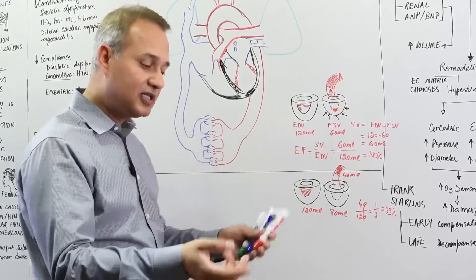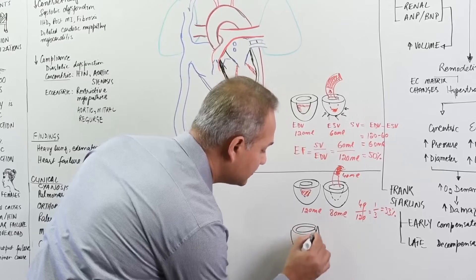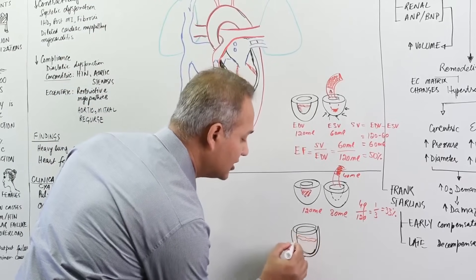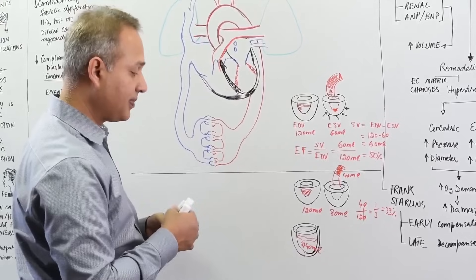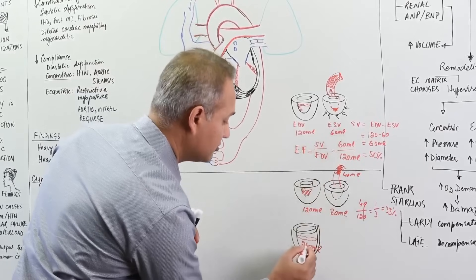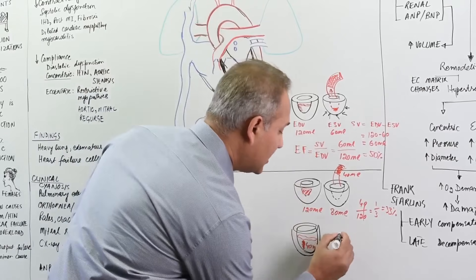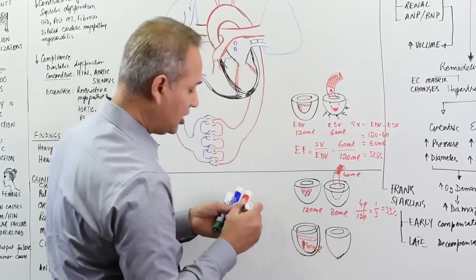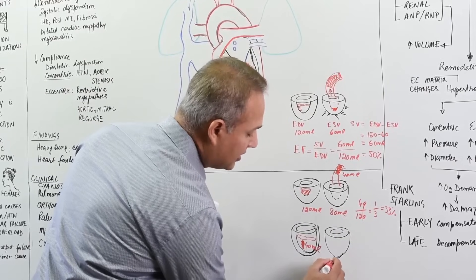Now, diastolic dysfunction means the systole is happening okay, but there is a problem with diastolic function. Consider a heart with diastolic dysfunction that is dilated and a little larger. In this heart, the blood present is 140 milliliters. Because there is a lot of blood, when the heart goes into systole it cannot eject it all.